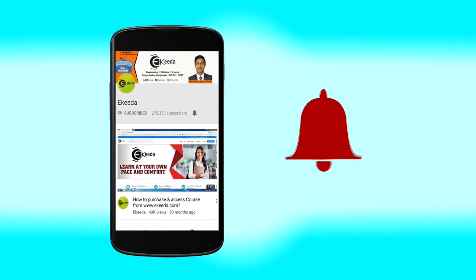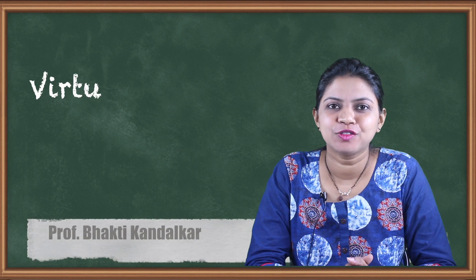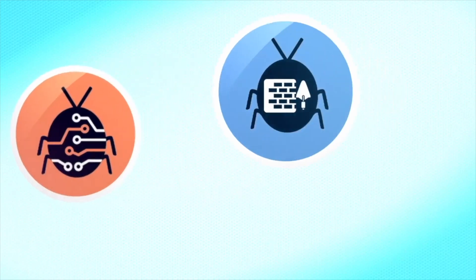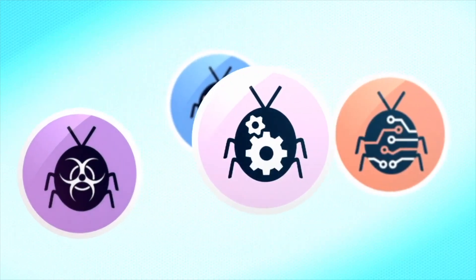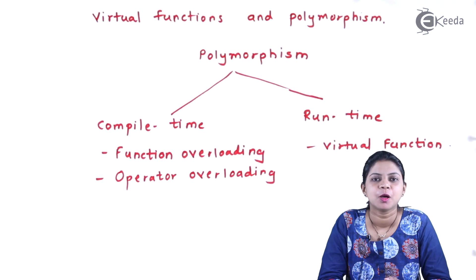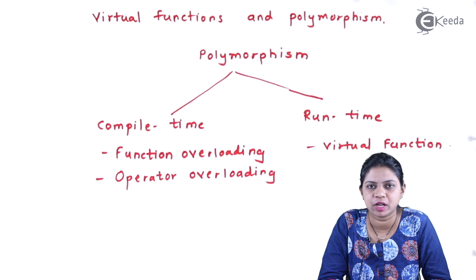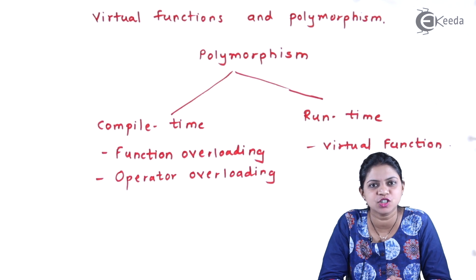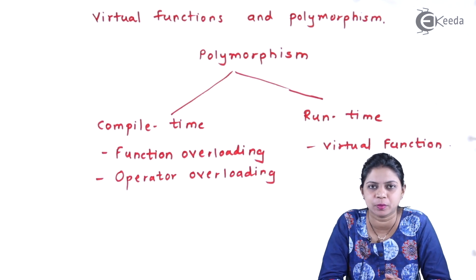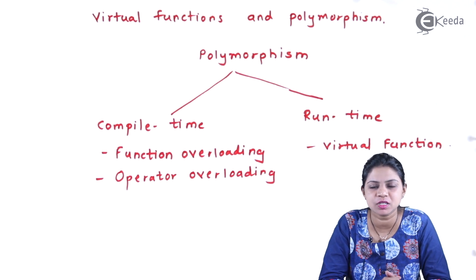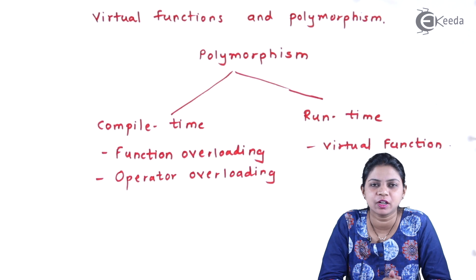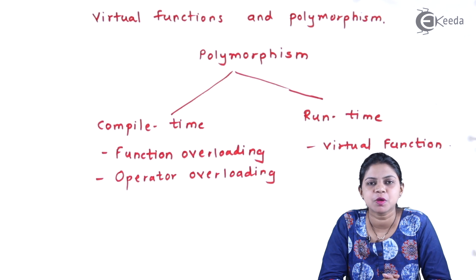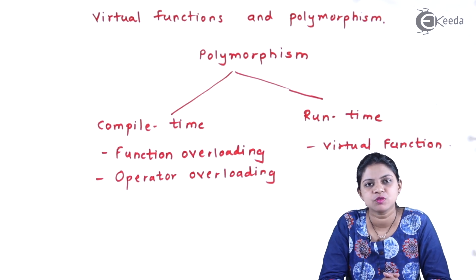Hello friends, in this video we will study what is virtual function and polymorphism. Polymorphism is an ability to take more than one form. For example, the plus operator can be used as an addition operator and also as a concatenation operator. When used with numbers it is an addition operator, whereas when used with strings it is a concatenation operator — so the plus operator has more than one form.